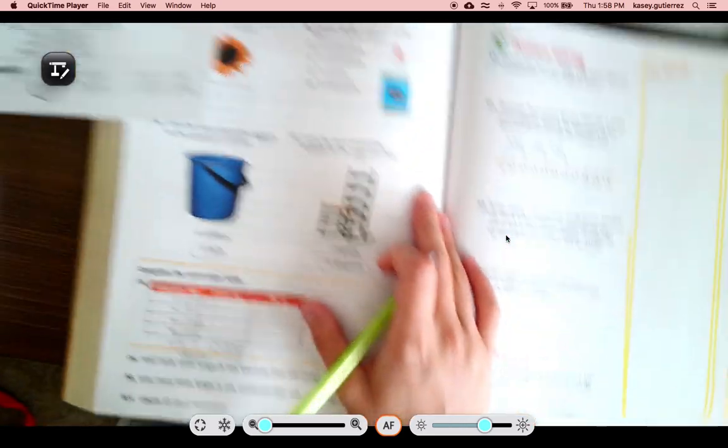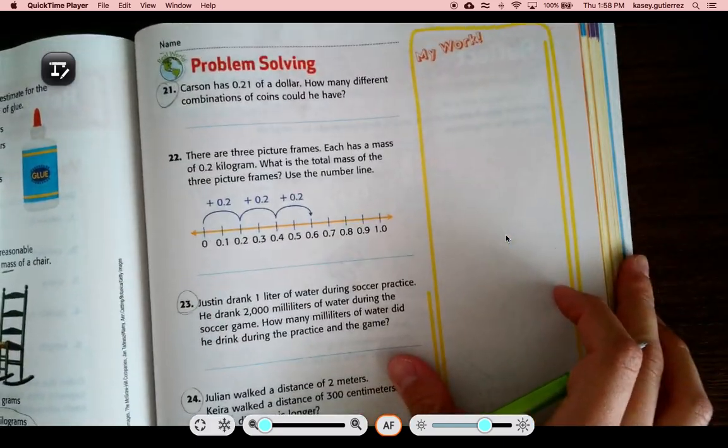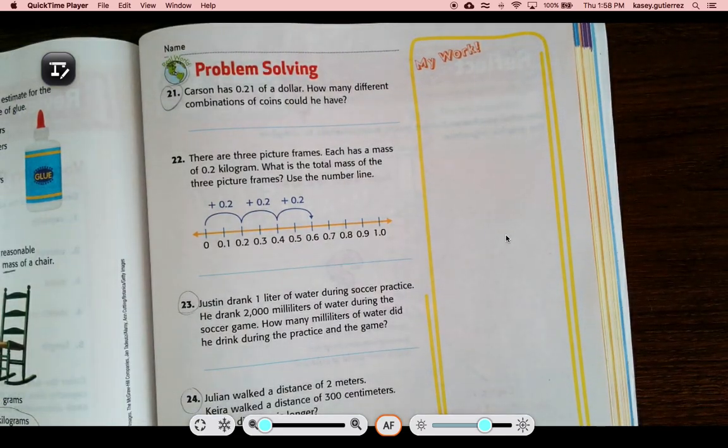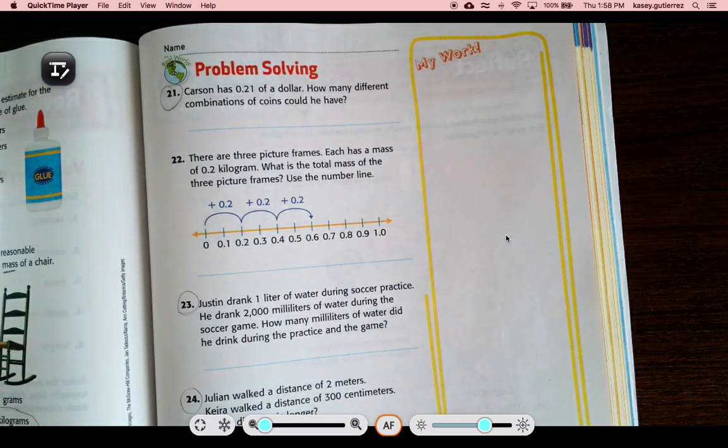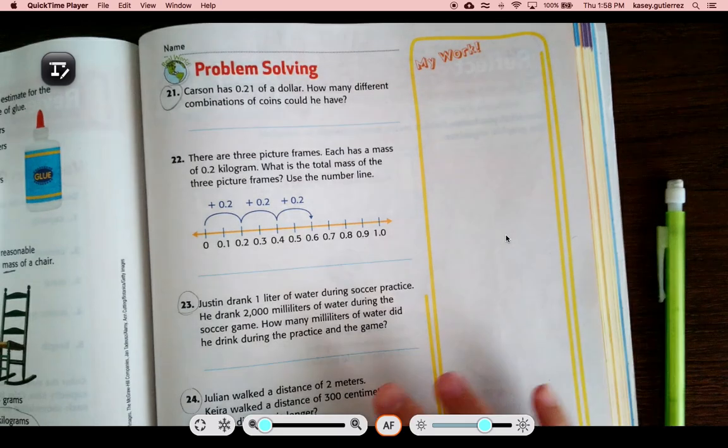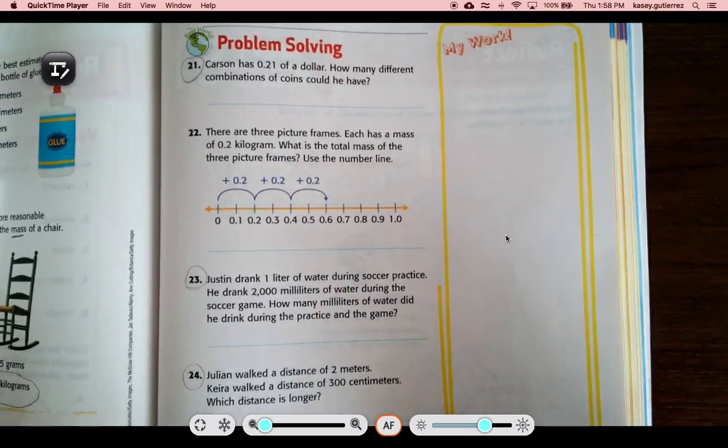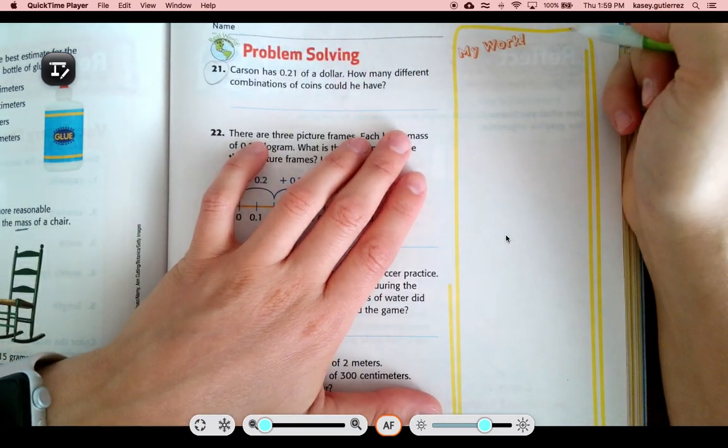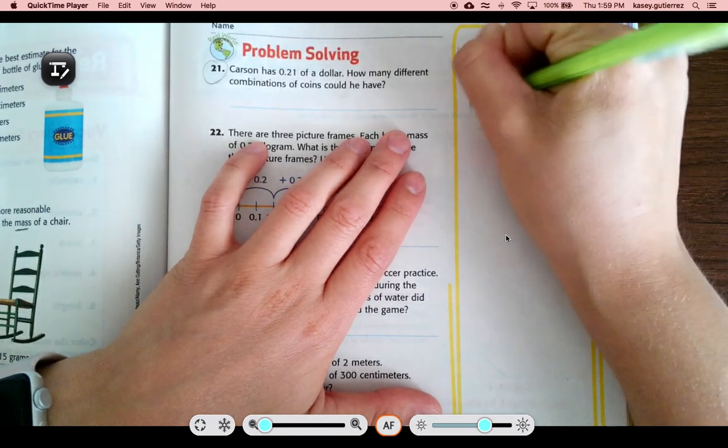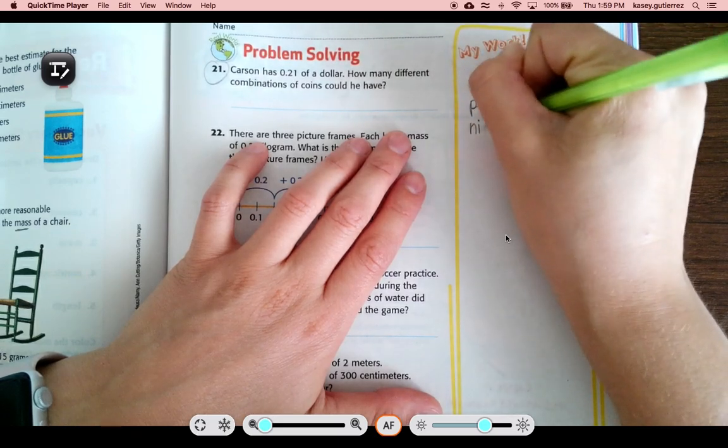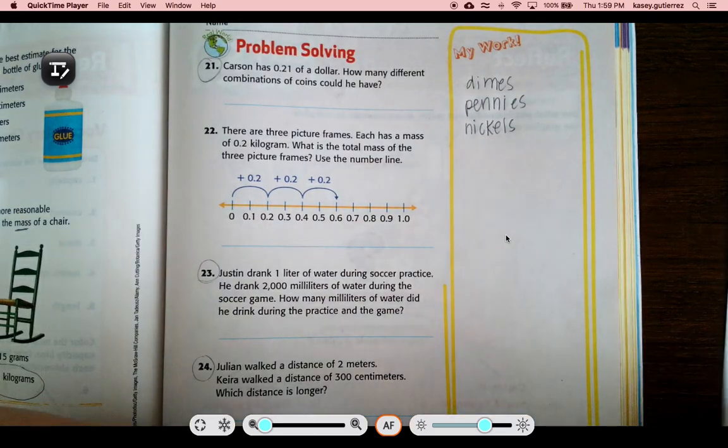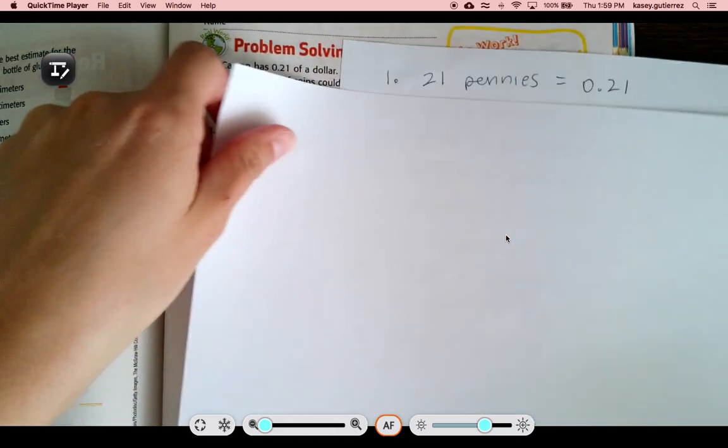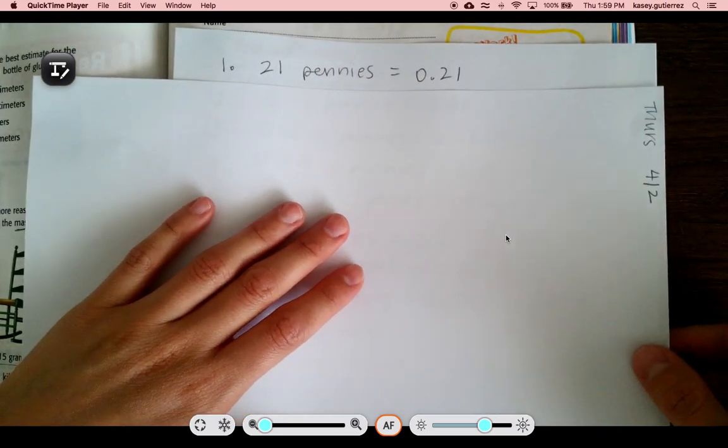Let's go to the next page. Number 21 says, Carson has 21 hundredths of a dollar. How many different combinations of coins could we have? That's a lengthy question because there's lots of different ways we can do this. We could use dimes, pennies, and nickels. We can't use quarters because quarters equal 25 cents. The first option we can do is just 21 pennies. One penny equals one cent, so that would equal 21 hundredths.